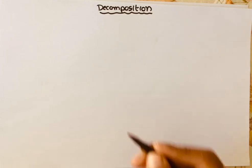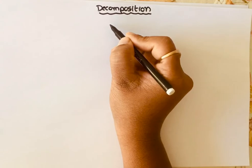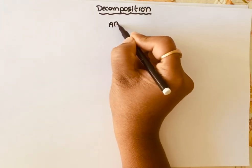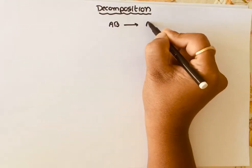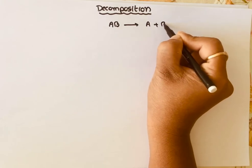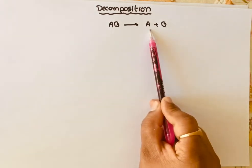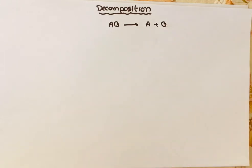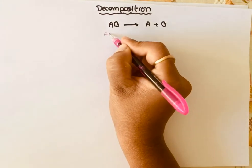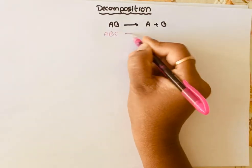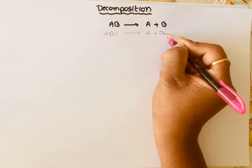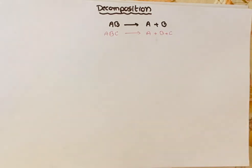When a single compound breaks into simple products, we call it a decomposition reaction. For example, if I take a compound AB, it may undergo dissociation into A plus B. Similarly, if I take a three-component compound ABC, it can form A plus B plus C. Such reactions are called decomposition reactions.